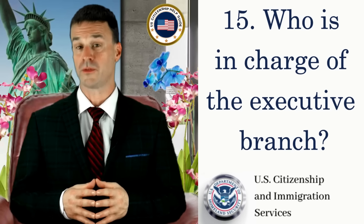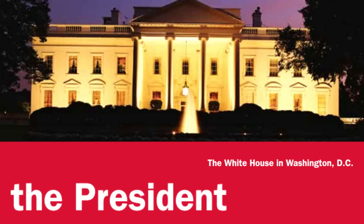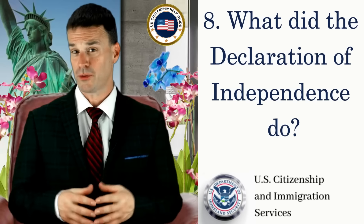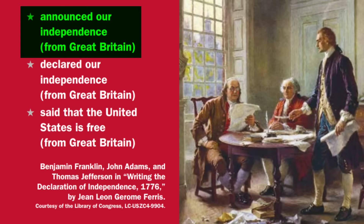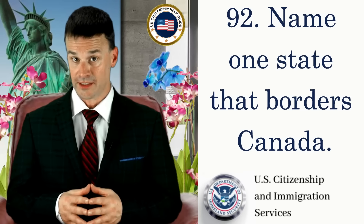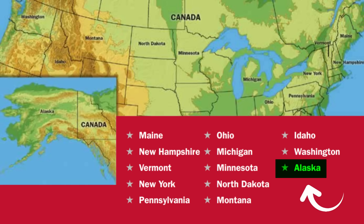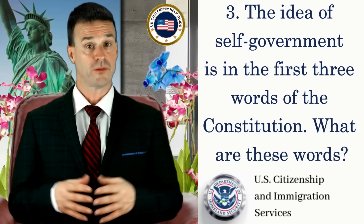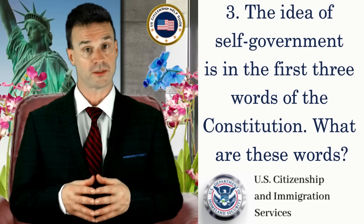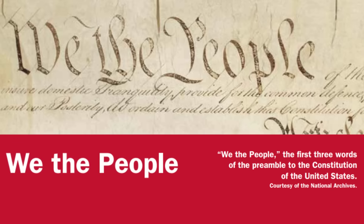Who is in charge of the executive branch? The President. What did the Declaration of Independence do? Announced our independence from Great Britain. Name one state that borders Canada. Alaska. The idea of self-government is the first three words of the Constitution. What are these words? We the people.